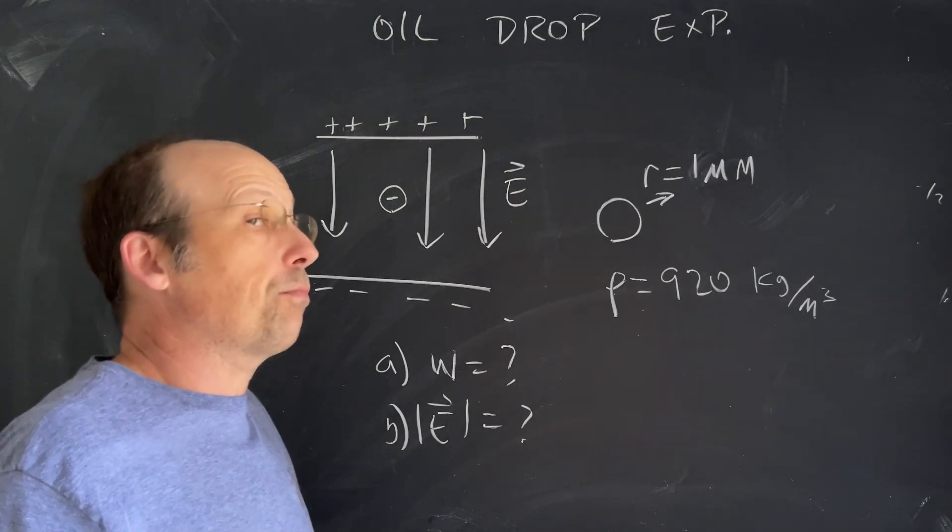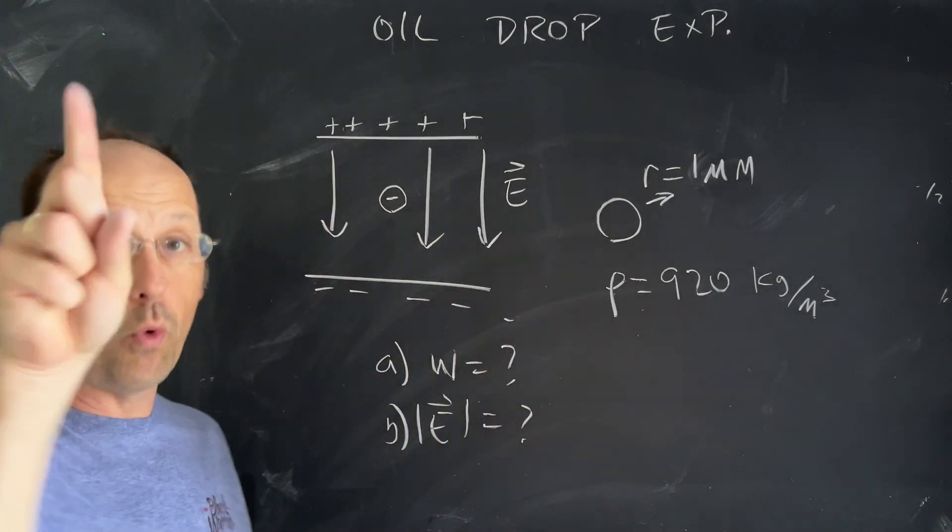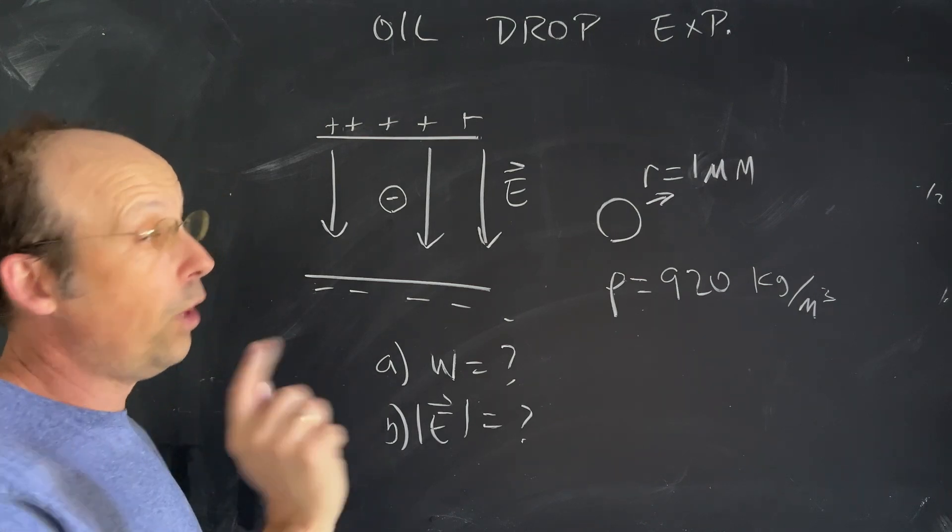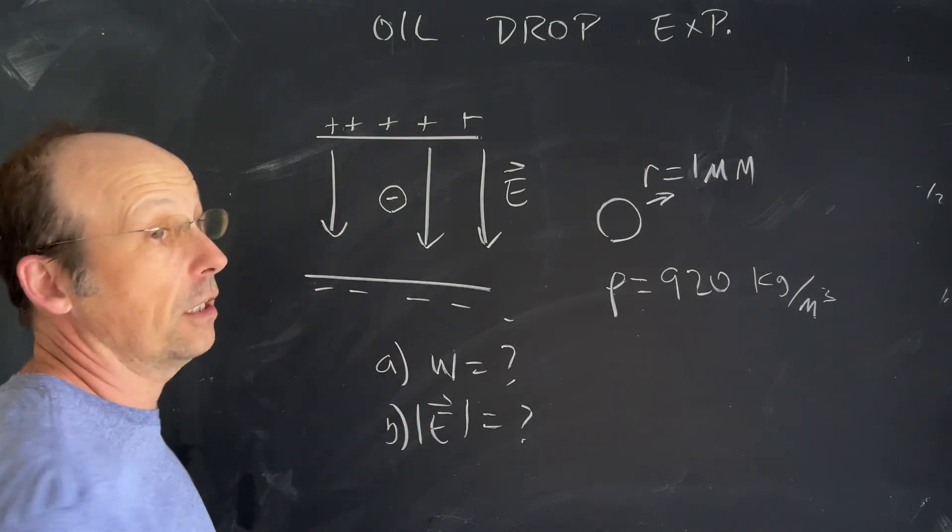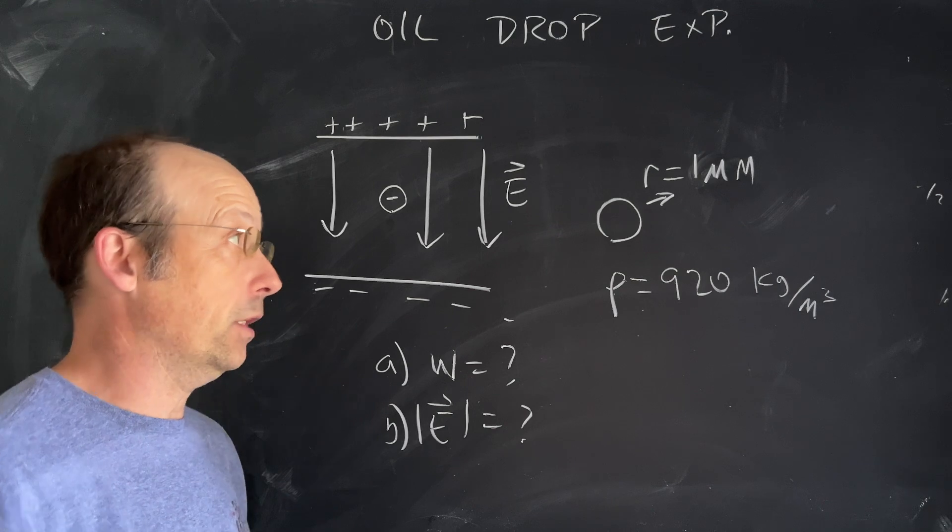Let's work this problem backwards. Let's say that we know the charge of an electron and this drop has one extra electron on it. So question number one is what's the weight of the oil drop and what's the value of the electric field?